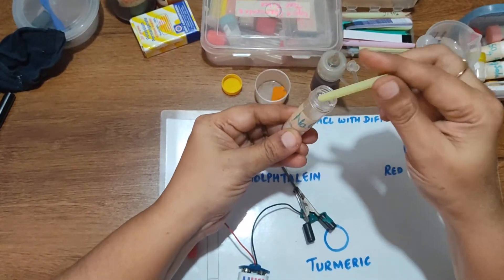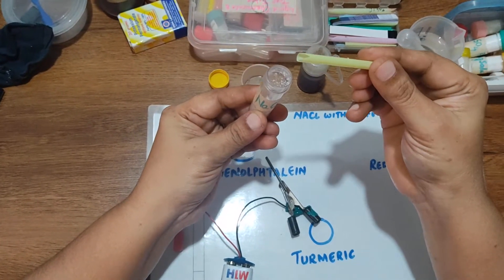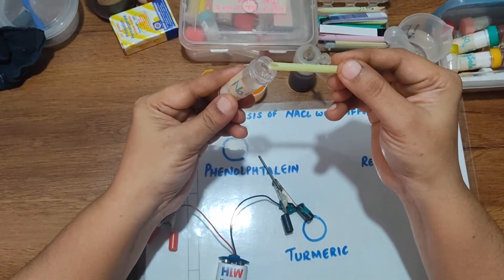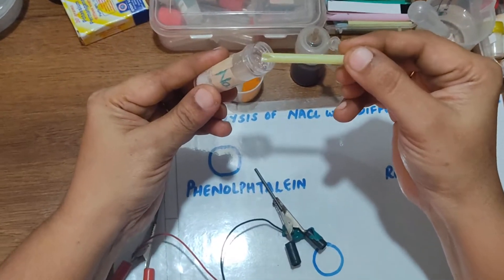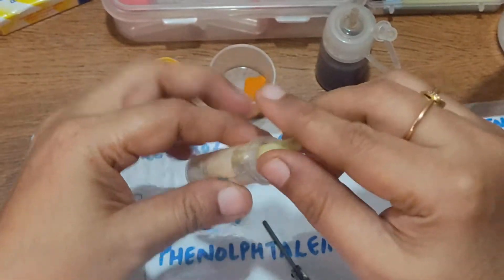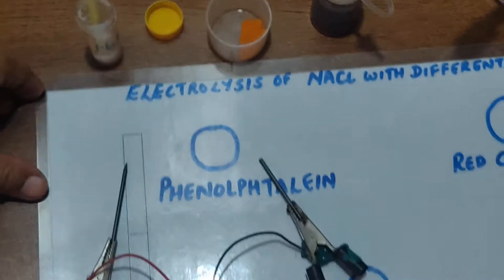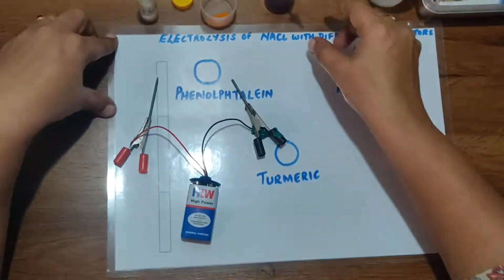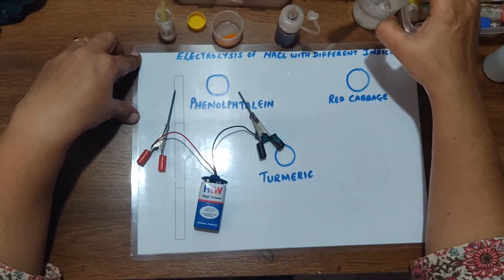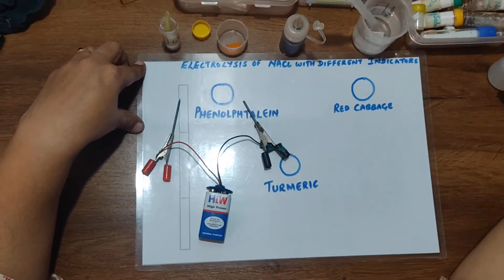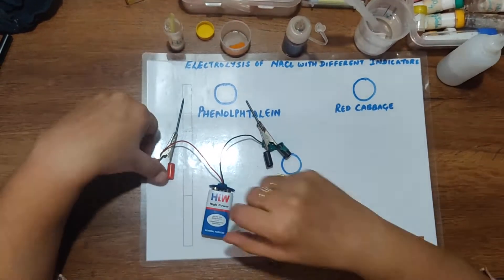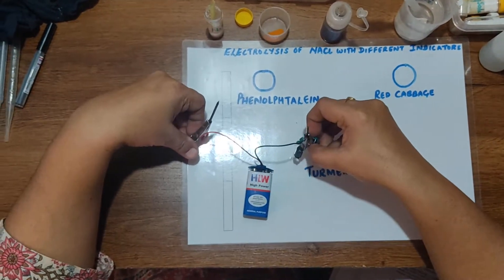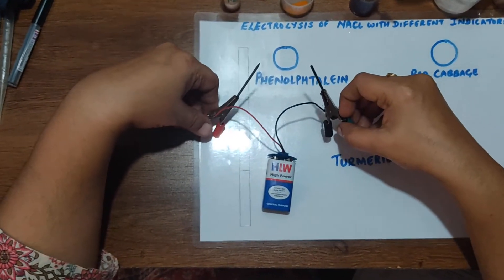I've made this straw into a spatula. This is very useful to transfer micro milligrams of the chemical required. This is a laminated sheet on which I'm going to perform the experiment. This is turmeric and this is the red cabbage indicator. I've taken some water and phenolphthalein indicator. I have a nine volt battery, a cap, and two graphite rods which I've taken from the pencil.